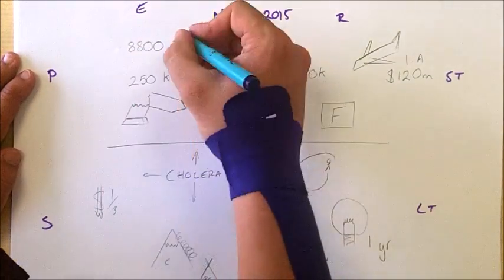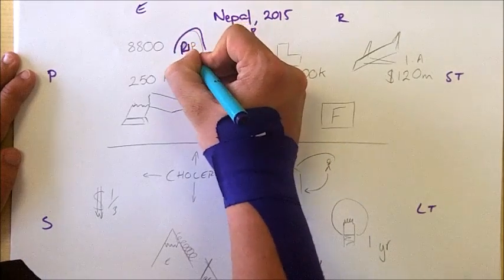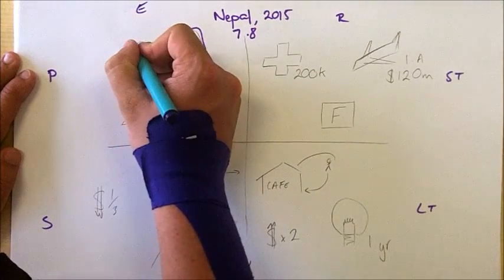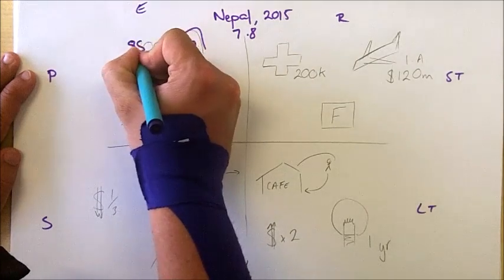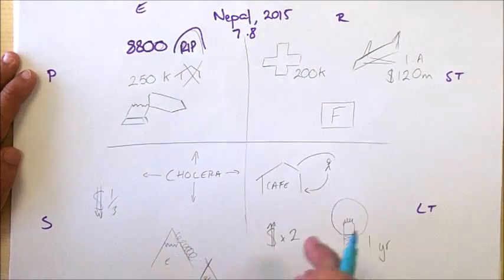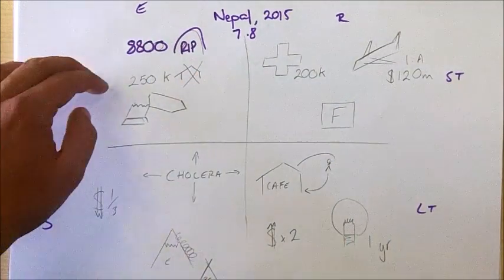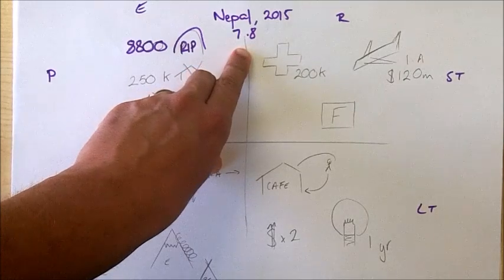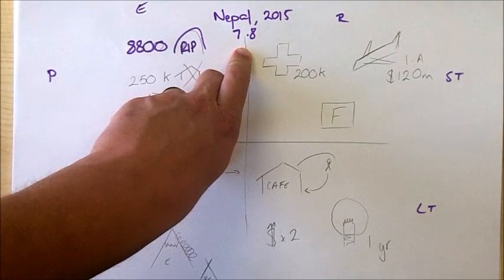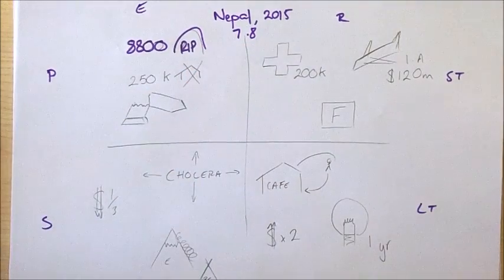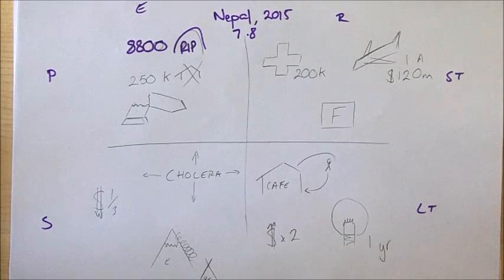If you remember back in the Christchurch one we had 180 deaths. In Nepal we had 8,800, so much higher number. As we said, some of that may be attributable to the higher magnitude of the stronger earthquake, but obviously that such large difference has probably got other factors behind it associated with the difference in the level of wealth between the two countries.